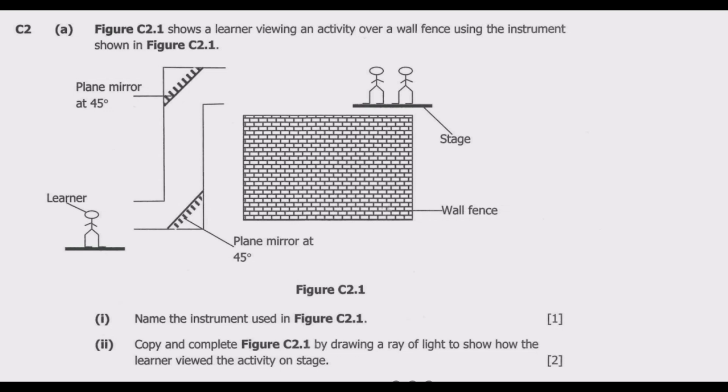So let us move straight to question C2 of section C where we are expected to answer two questions out of three. Question A: Figure C2.1 shows a learner viewing an activity over a wall fence using the instrument shown in Figure C2.1.